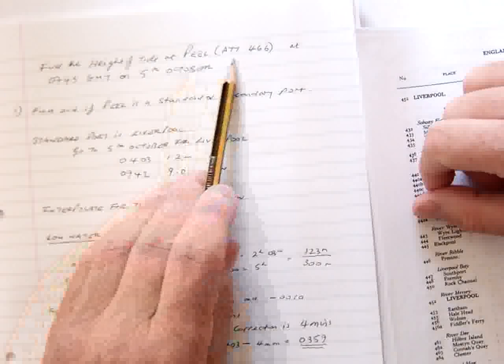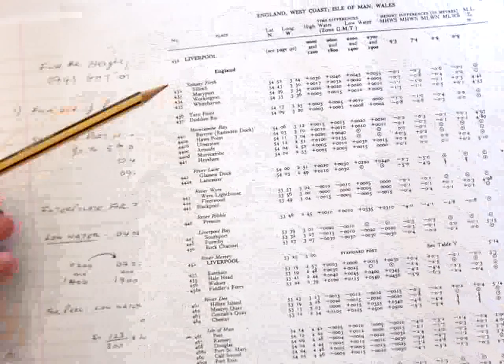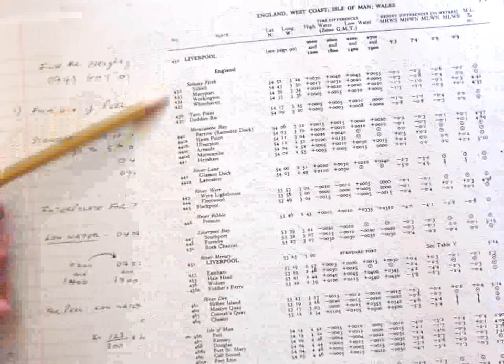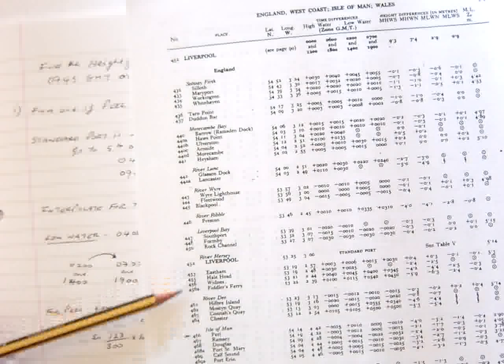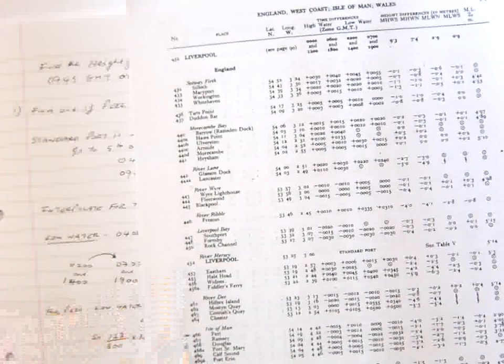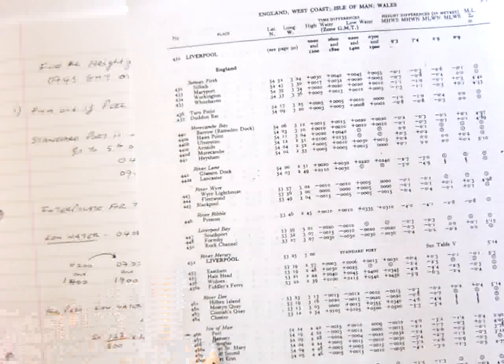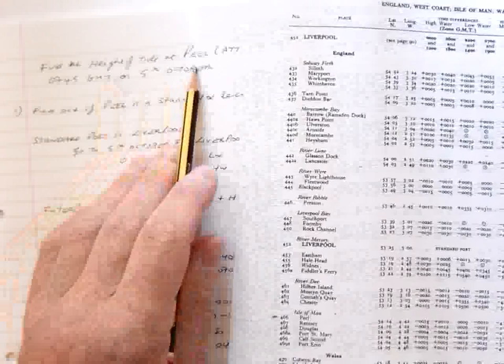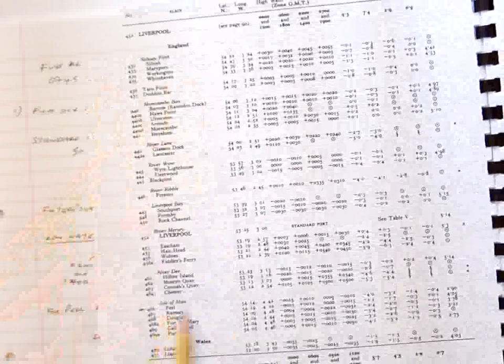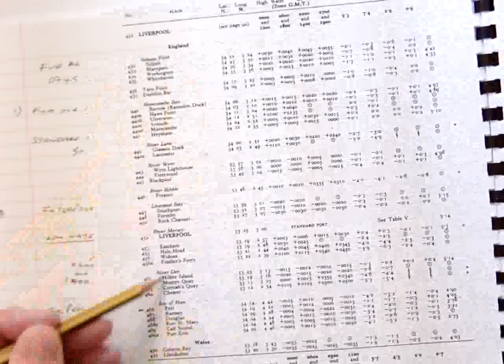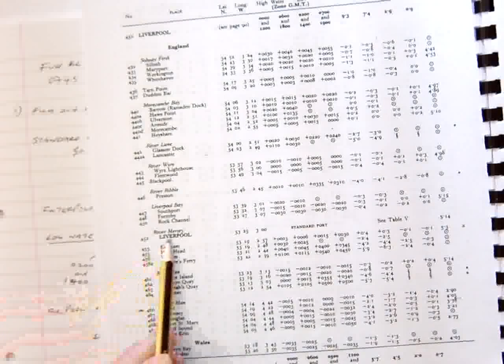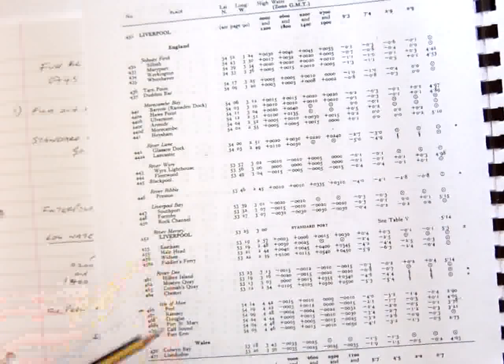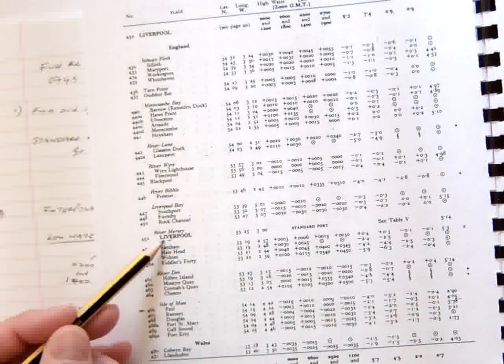We're given our ATT number as 466. So we go into the tide tables, along the ATT numbers in numerical order until we come to 466 and we find Peel. That's what we've got there, Peel, the Isle of Man. So we go up from Peel to the first port in capital letters in dark print and it's Liverpool. So we now know that our standard port is Liverpool.